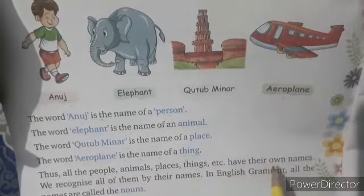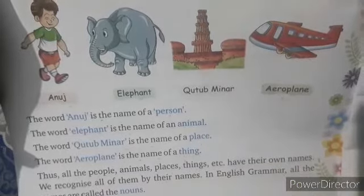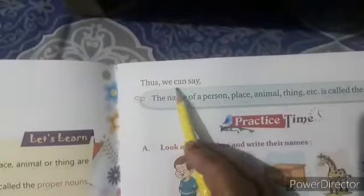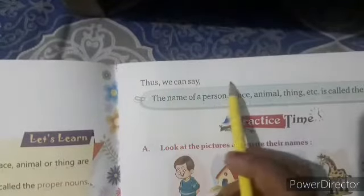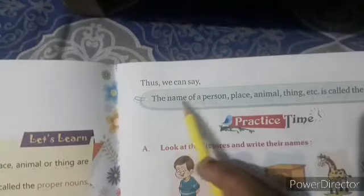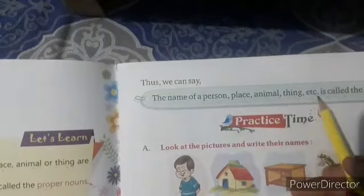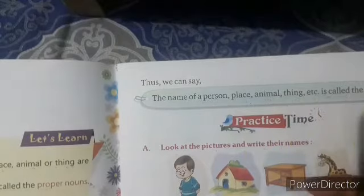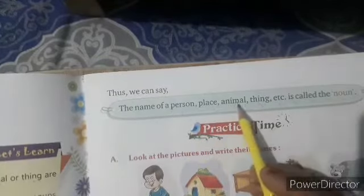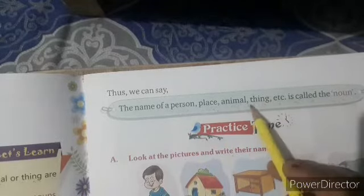So they are all nouns. Thus, we can say — is liye hum keh sakte hai — the name of a person, place, animal, thing, etc. is called the noun. Kisi vyakti, sthan, janwar, aur vastu ke naam ko SANGYA kehte hai. This is the definition of noun.